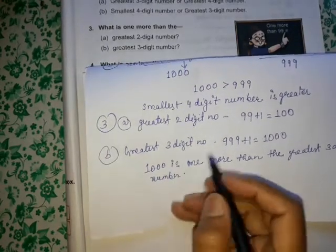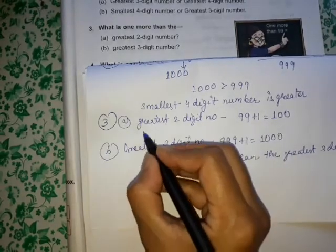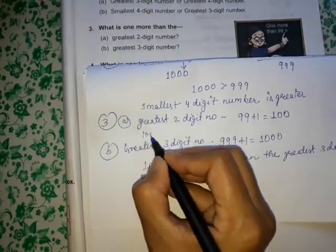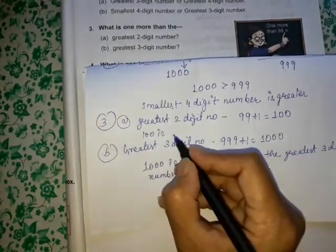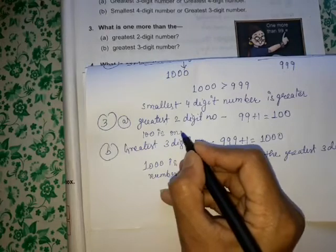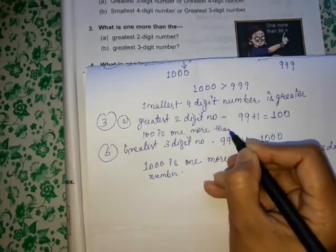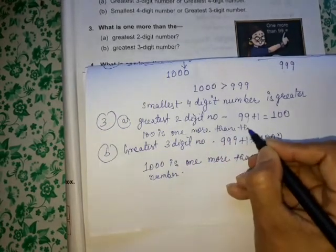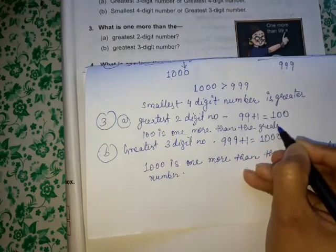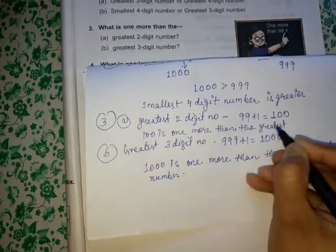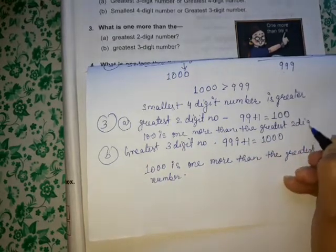So we write: 100 is one more than the greatest two digit number, and 1000 is one more than the greatest three digit number.